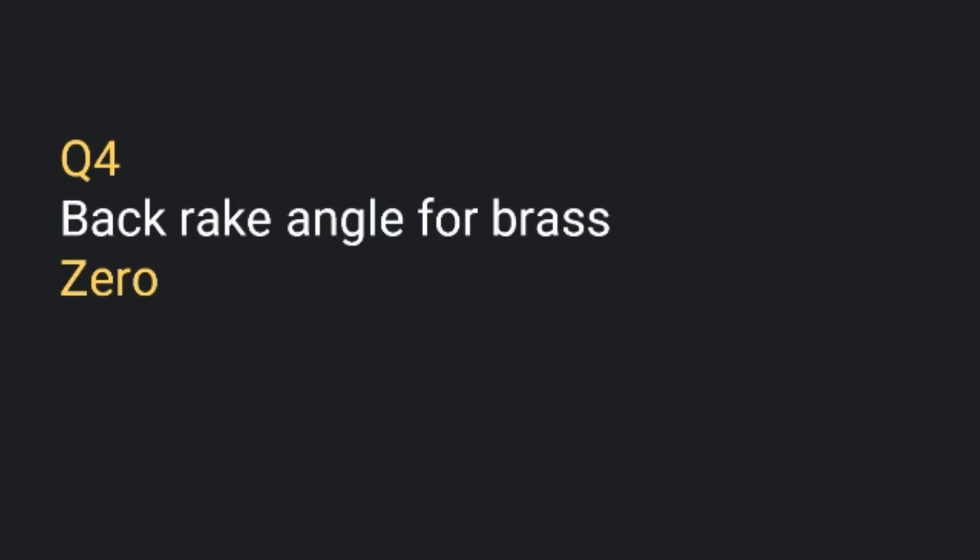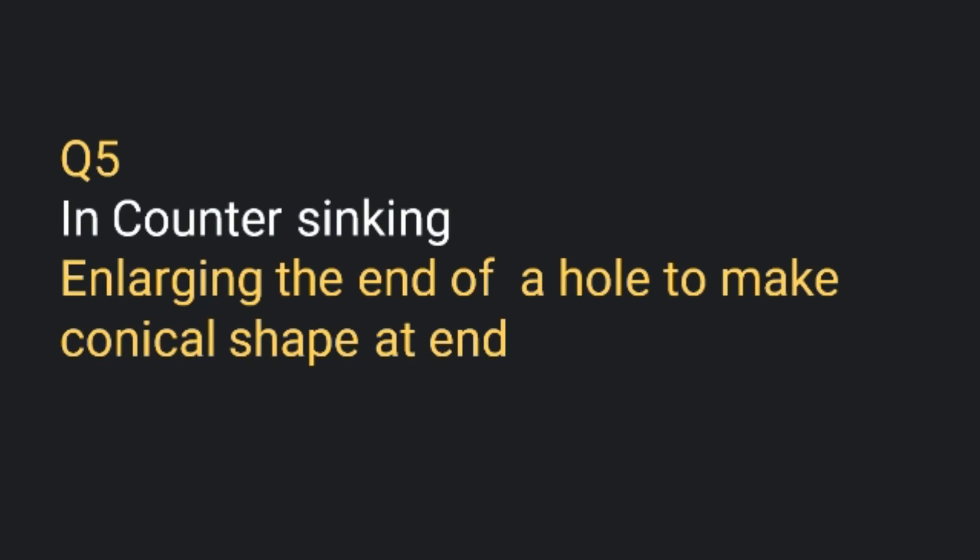In counter sinking, the operation involves enlarging the end of a hole to make a conical shape. Generally there are two operations after drilling: counter boring and counter sinking. In counter boring, we enlarge the hole so that a bolt can be placed easily, while counter sinking creates a taper so that a screw can be seated flush.